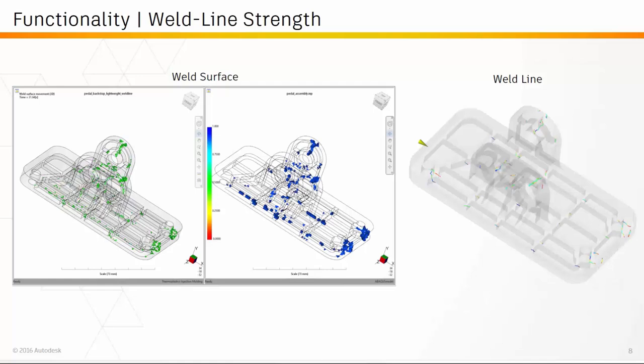We have also added functionality for weld line strength prediction. Within Helios PFA, we can now map 3D weld surface data from Moldflow to the structural simulation. Typically users map weld lines, and while Moldflow does output weld line locations, these are more for aesthetic purposes. What we're really after are the 3D weld surface locations after they have formed and moved due to the packing phase — and that's what Helios PFA maps. You can now run a Moldflow simulation and map the 3D weld surface locations after movement to the structural mesh to accurately capture where those weld surfaces have moved to.